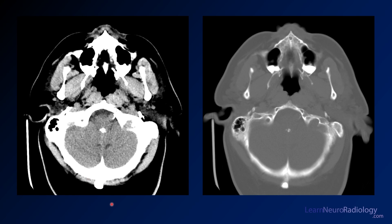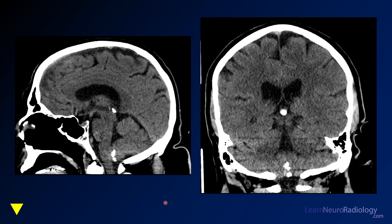We have some images from a CT — a bone window on the right and a brain window on the left. This is a subtle abnormality; it's kind of symmetric, which is always trouble for a neuroradiologist. Hopefully these reformatted images help — we have a sagittal reformat and a coronal reformat.